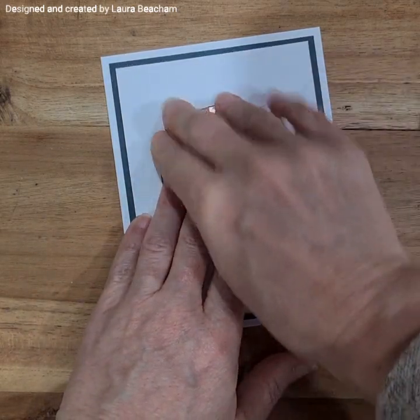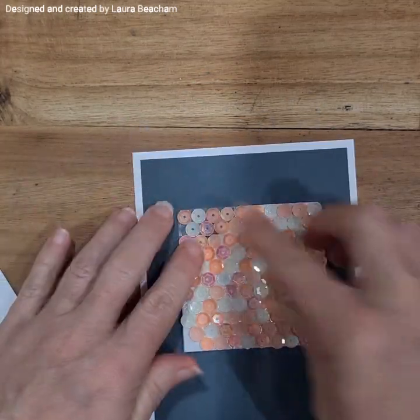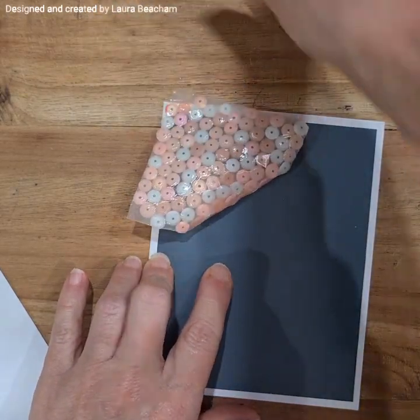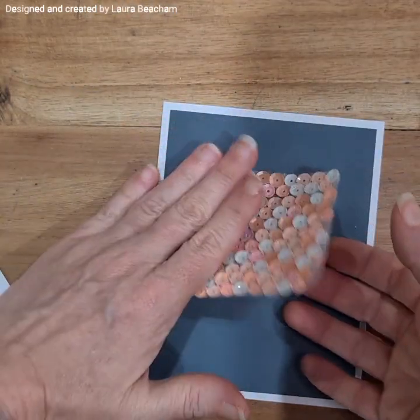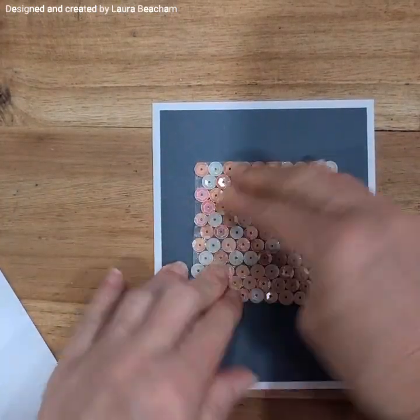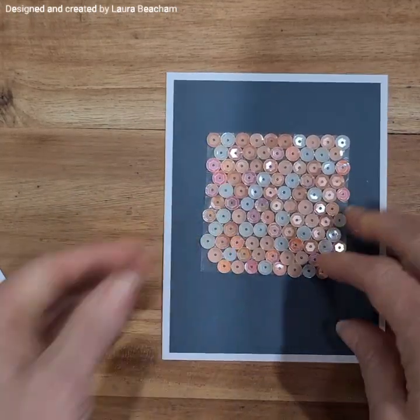That corner is stuck down onto the project, and then I'll just pull that back and remove the rest of the backing and then just gently lay that down and press that down. So now all of those sequins are onto my project. Is that simple?